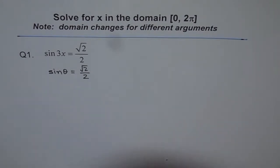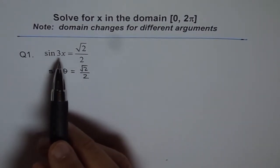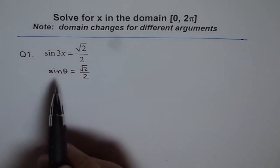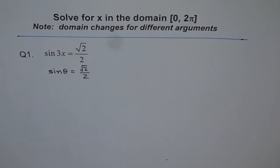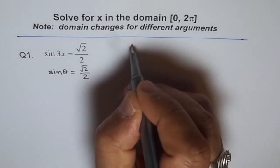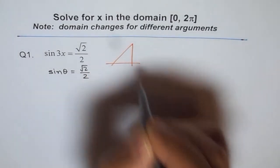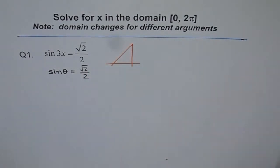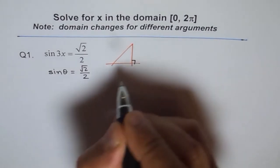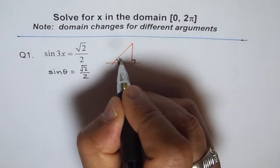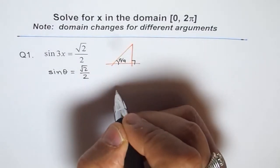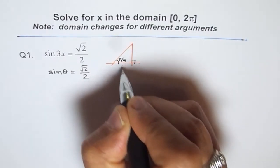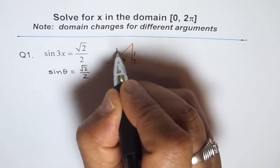Now, when we say sin 3x equals square root 2 over 2, we can always find what value of theta will give us square root 2 over 2. And we know this is from our special triangle and that one is with 45 degrees or π by 4. So this angle is π by 4 and the sides for us are 1, 1 and square root 2.